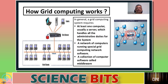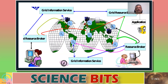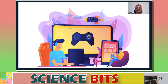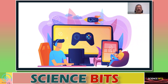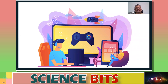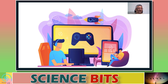Grid computing is essentially a grid of connected computers. People in different parts of the world can be connected through this grid and do work together. One of the simplest examples of grid computing is online multiplayer games — you sit before your computer playing chess while someone 5,000 kilometers away in another continent plays chess with you.